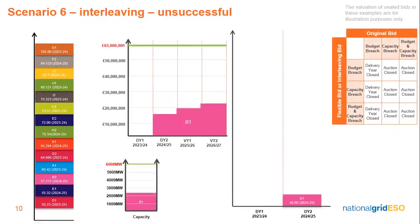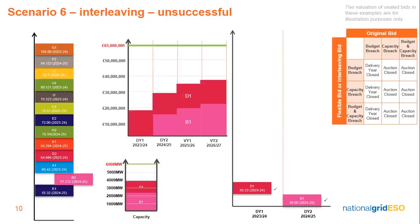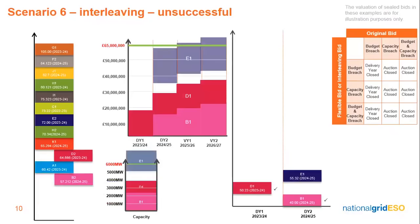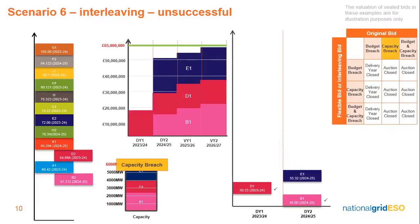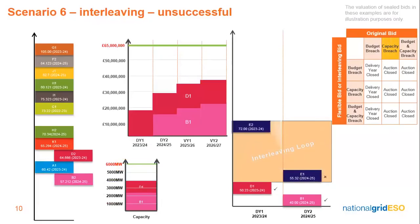Bid B1 is successfully allocated within the budget and capacity cap limits. Bid D1 is also successfully allocated. Bid E1 has breached capacity. There is a further flexible bid from Project E — E2 — so an interleaving loop forms. It's important to note that interleaving can be triggered through either budget breach, capacity breach, or budget and capacity breach, and any combination could have different outcomes if interleaving is successful or unsuccessful.